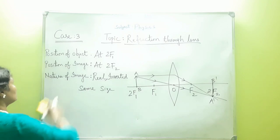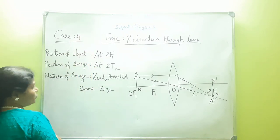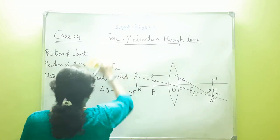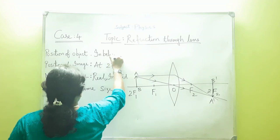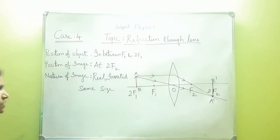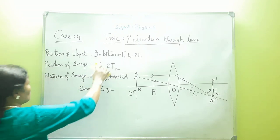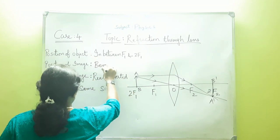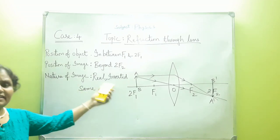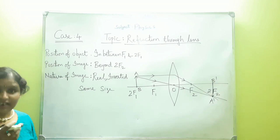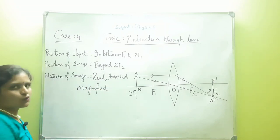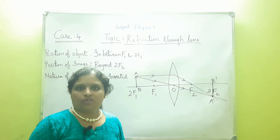Let us move on to case 4. In case 4, the position of the object is in between F1 and 2F1. The position of the image would be beyond 2F2. It would be a real, inverted and magnified image.